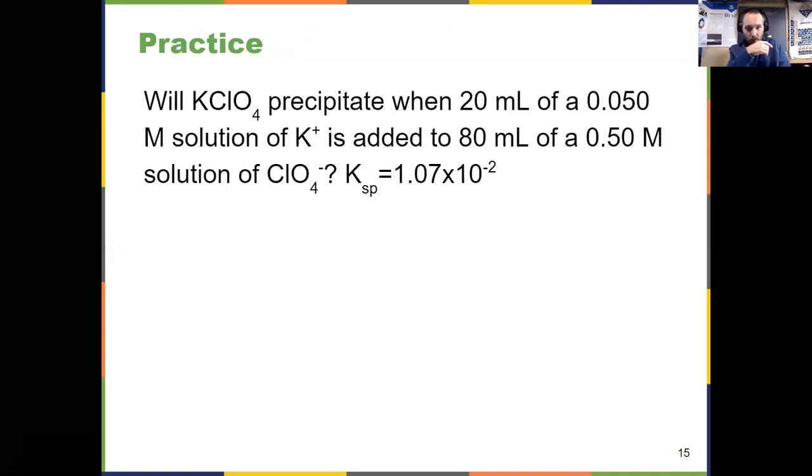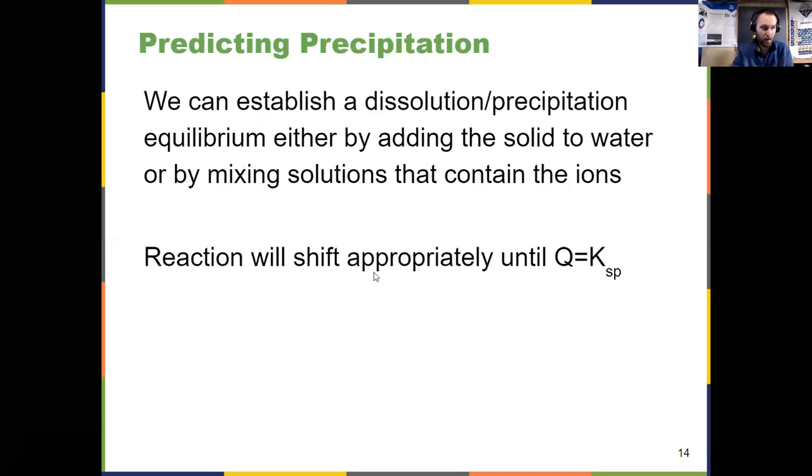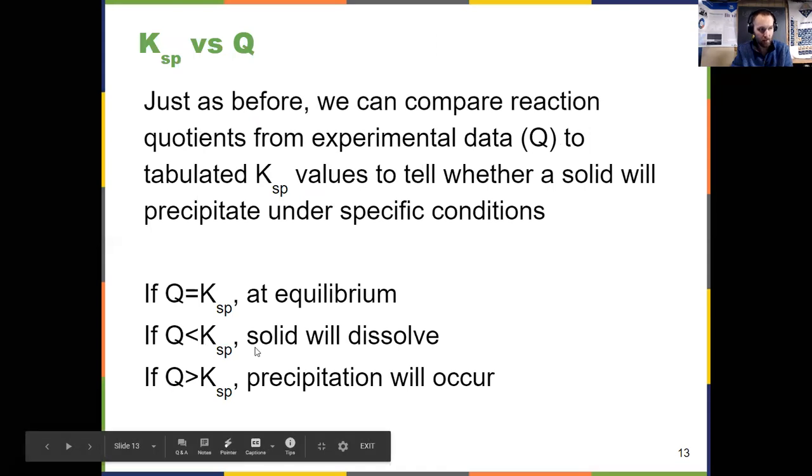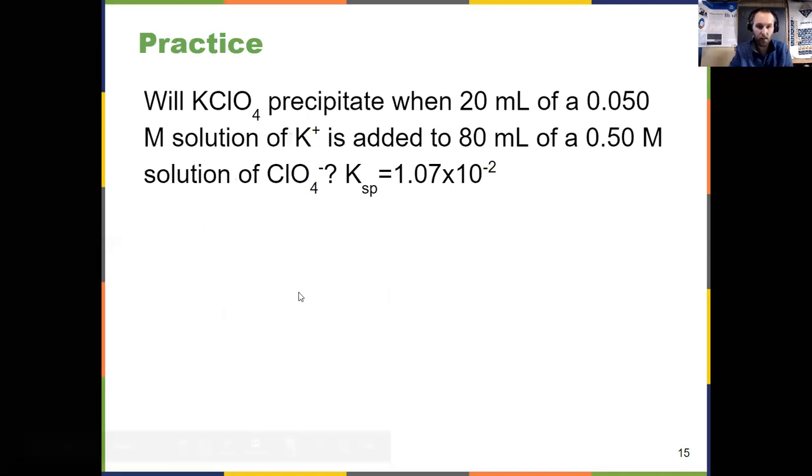This is the type of question that asks that. Will potassium perchlorate precipitate when I add two solutions? 20 milliliters of 0.05 molar potassium with 80 milliliters of 0.5 molar perchlorate given the KSP. What you need to do to solve this problem: write the expression, solve for Q because you don't know if we're at equilibrium or not, and compare that value of Q to K. In this situation, you're going to solve for a Q value, 4 times 10 to the negative third. 10 to the negative third is less than your K value. So no, you will not precipitate because Q is less than K. So it's not going to precipitate. Those things will stay dissolved. I'll have a supplemental video for that.